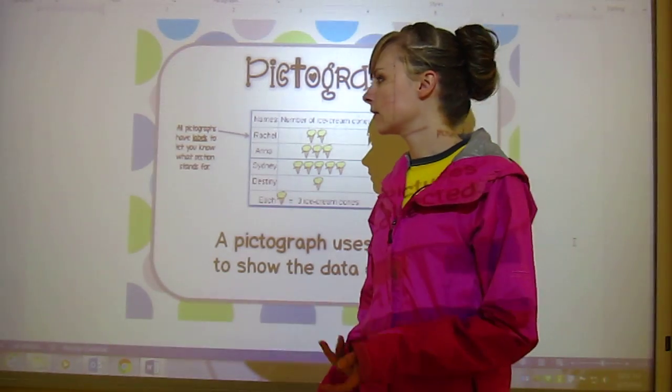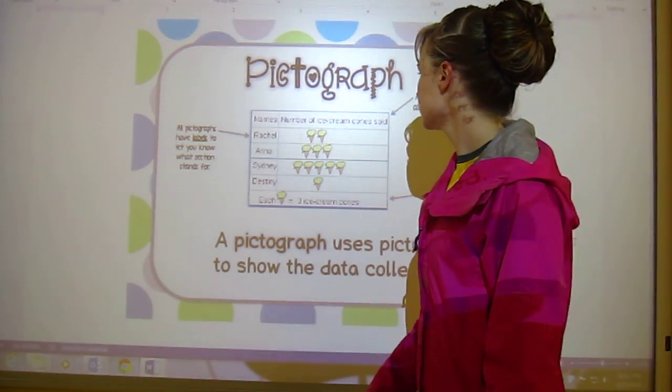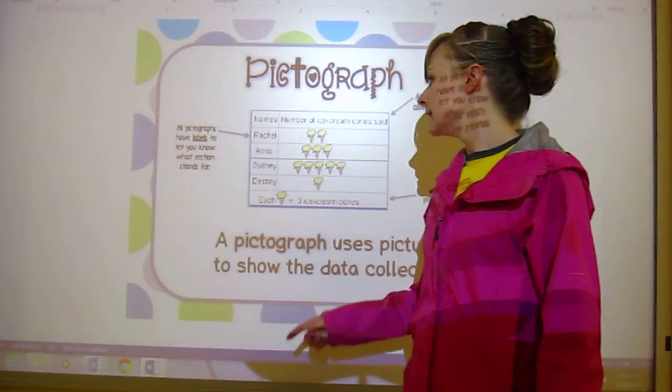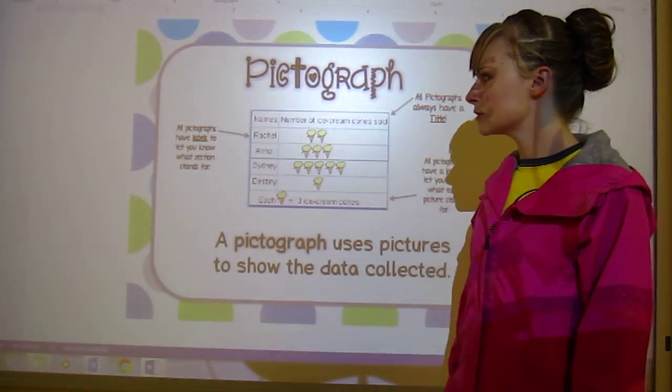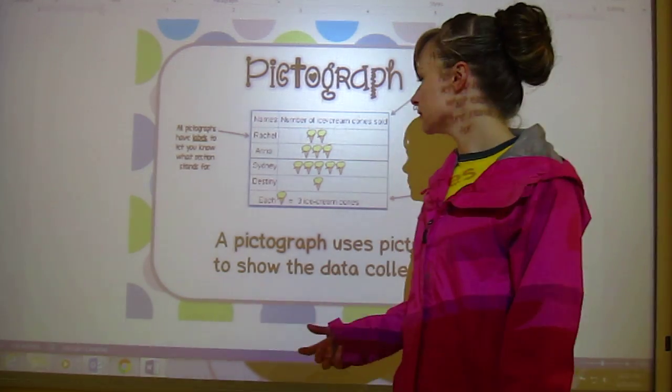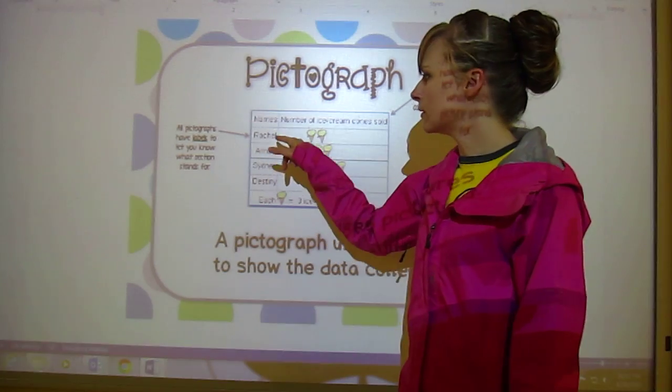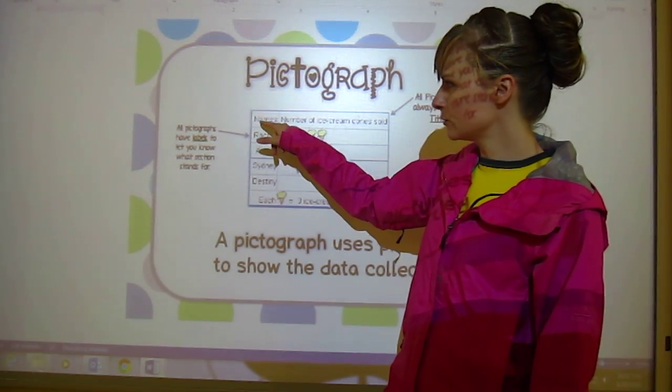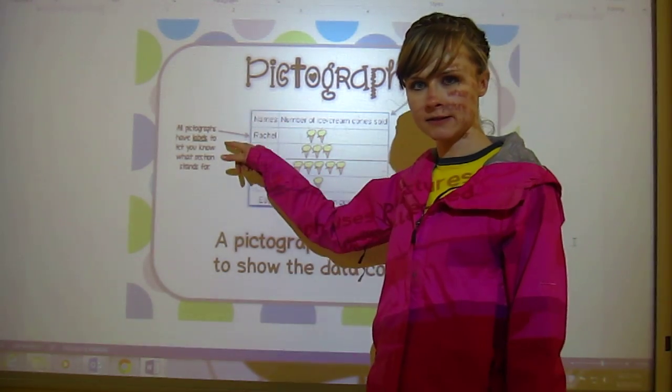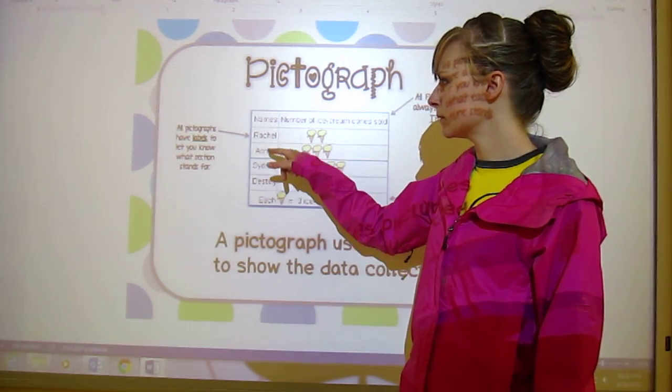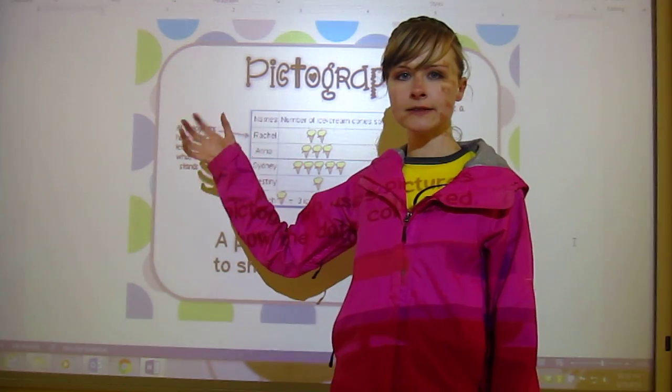Parts of a pictograph that you need to be aware of is there's also always a title to tell you what it's about. In this case, number of ice cream cones sold. You also need to make sure that you have labels. So this section is labeled with names. Usually we would put it along this side but sometimes not.